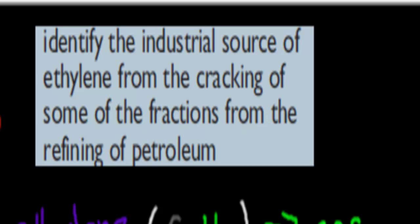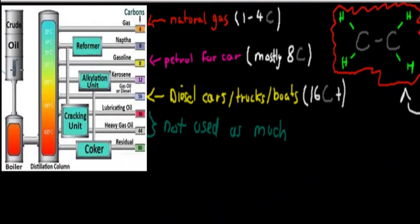We'll go over what petroleum was again. Petroleum was just crude oil — the oil we get from the ground itself. What we do with that crude oil is bring it into a distillation column. You would have done this in year 11 but I'm going to go over it again. When you put crude oil into this distillation column, that heat will separate crude oil, which is a mixture of lots of different things, into its individual components.